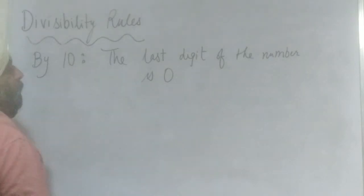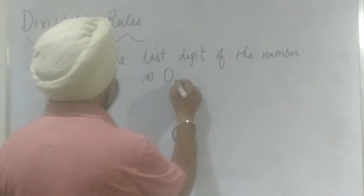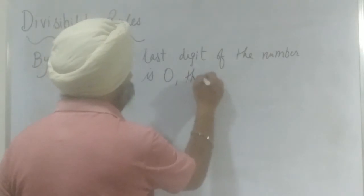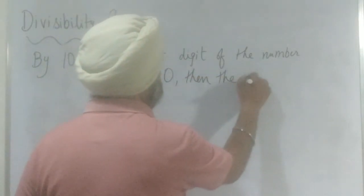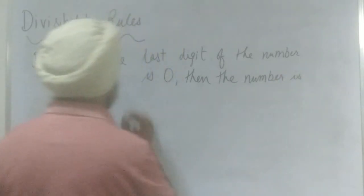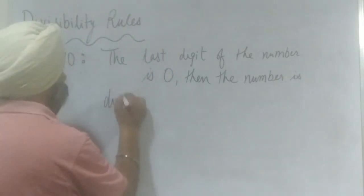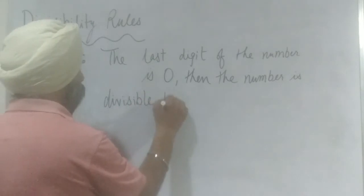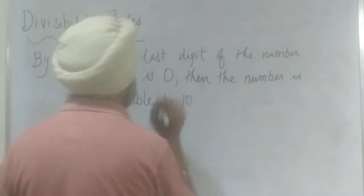If the last digit is 0, then the number is divisible by 10.